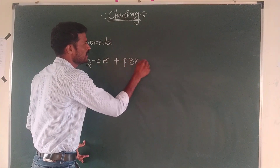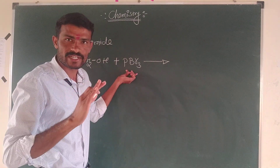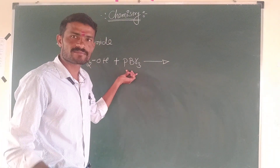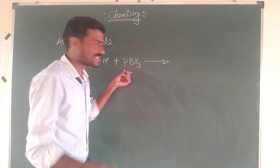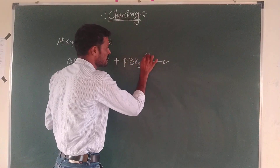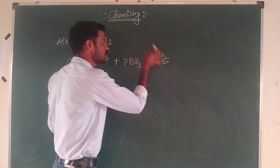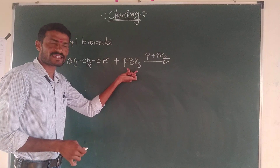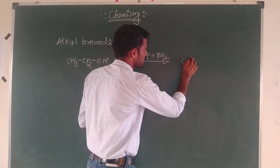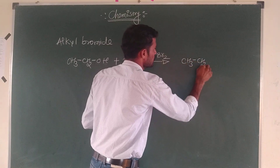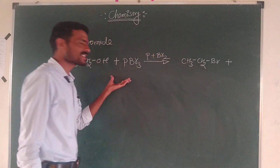PBr3 — in the presence of red phosphorus plus bromine, PBr3 and CH3CH2 gives a bromide product plus byproduct.